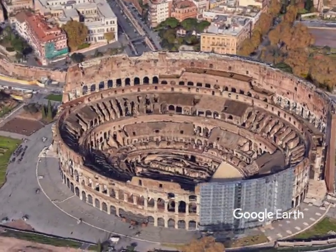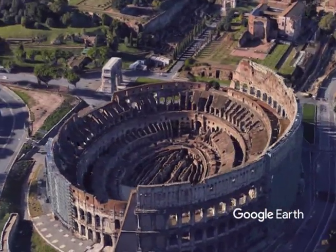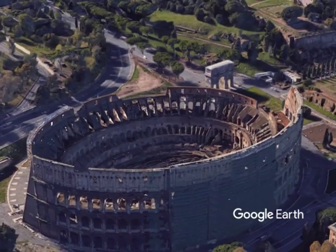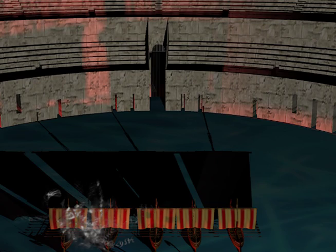Long before the Colosseum became the center of bloody gladiatorial fights, it was used to reenact famous naval battles from ancient history. The grounds were flooded with water, allowing ships to float and simulate the condition of a battle at sea.